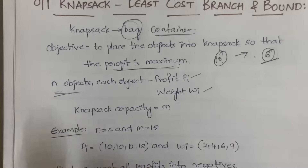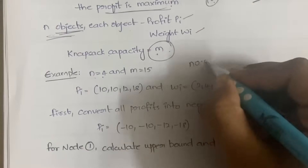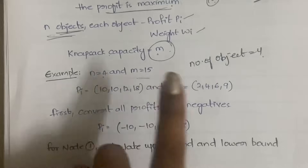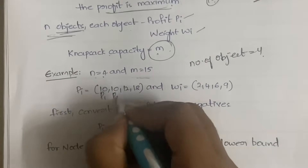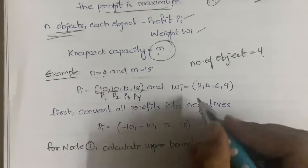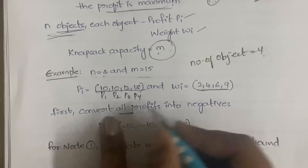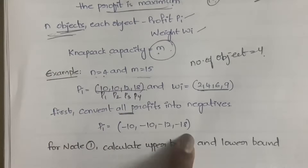We are considering the capacity of knapsack to be m. In our example, n is equal to 4 — that is 4 objects. The capacity of the knapsack m is 15. The profits of the 4 objects are p1, p2, p3, p4 = 10, 10, 12, 18 respectively, and the weights are 2, 4, 6, 9 respectively. Your first step is to convert all the profits into negatives: minus 10, minus 10, minus 12, and minus 18.